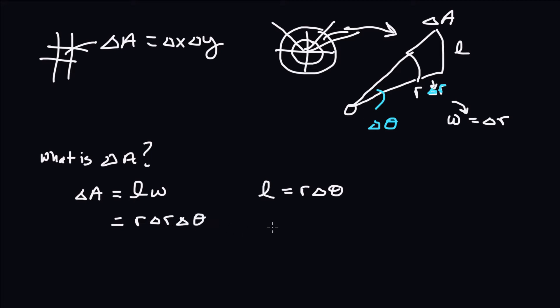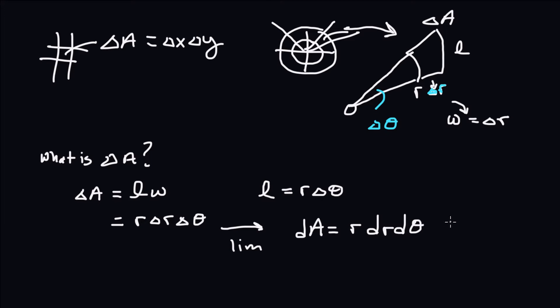That's what we stick into our Riemann sum. In the limit of the Riemann sum, dA becomes r dr dθ. So now you describe your region with polar coordinates, change dA to r dr dθ, and integrate. That's our goal, and we'll do that with the previous example.